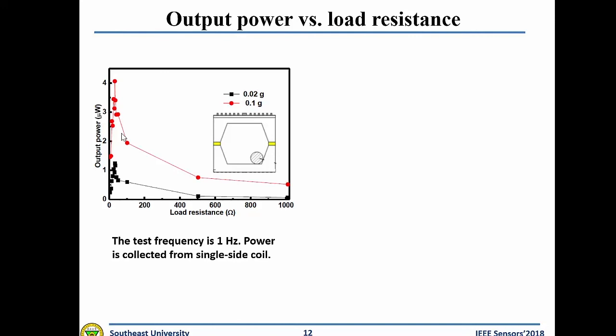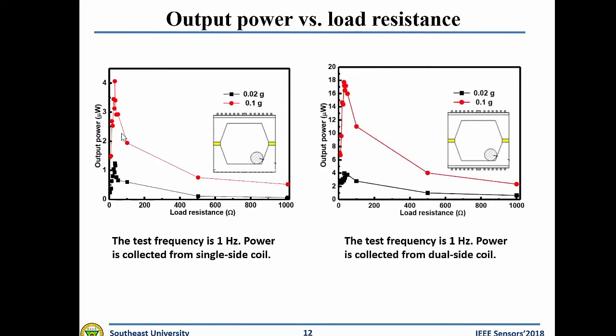In this case, the maximum output power is about 1.2 microwatts when the acceleration is 0.02 g, and when the acceleration is increased to 0.1 g, the maximum output reaches 4.1 microwatts. When the coils at both sides of the harvester are used for collecting vibration energy, the maximum output power is 4 microwatts at 0.02 g and 17.7 microwatts at 0.1 g. These output values are much higher than those from single-side coils, suggesting that transduction efficiency and output power can be significantly improved by using double-side coils.